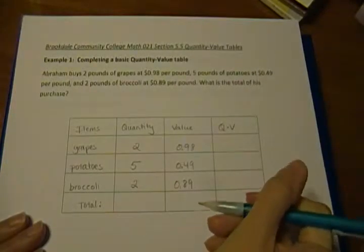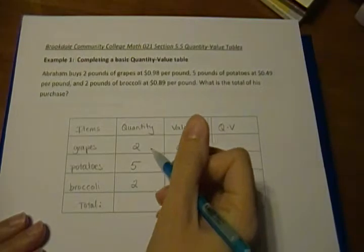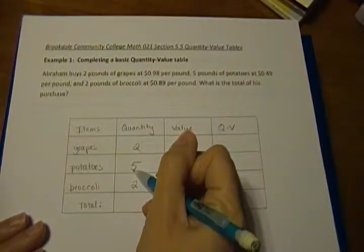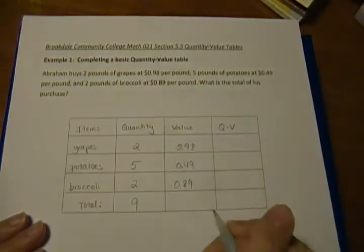So what we can start to do here, we can add up our total quantity. So we have two grapes, and five potatoes is seven, and two broccoli would be nine total items.